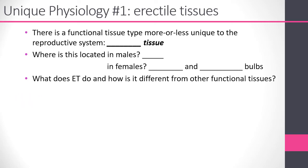There are two unique physiologies that we talk about in terms of the sexual response in the reproductive system. The first is that there's a unique tissue type called erectile tissue. Most functional tissues we've seen in the body have to do with some sort of muscle tissue — smooth muscles or skeletal muscles. The change in size and shape of the reproductive organs mostly has to do with erectile tissue instead.